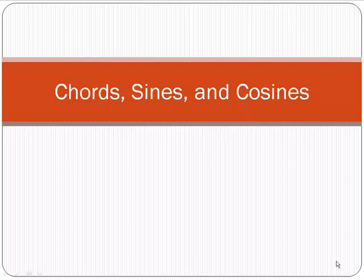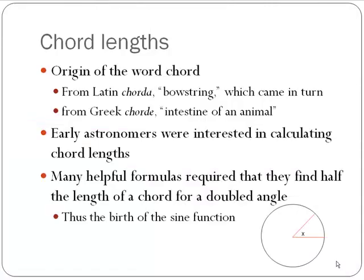This is Dusty Jones here to talk about chords, sines, and cosines. First of all, I want to talk about chords and chord lengths and the origin of the word chord. It comes from the Latin chorda, which means bowstring, which came from the Greek word chordae, which means animal intestine. That sounds kind of gruesome, but that's because bowstrings were made from animal intestines, and a chord — which is a line segment connecting two points on a circle — sort of looks like the string on a bow.